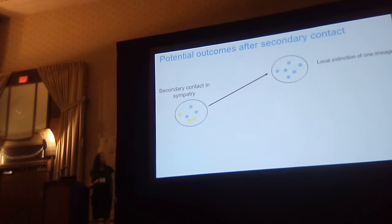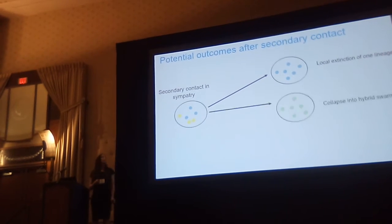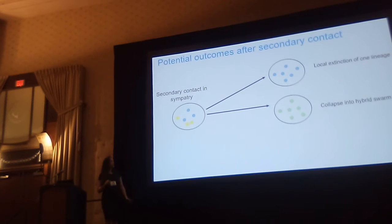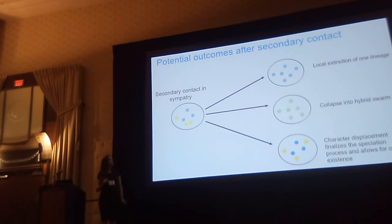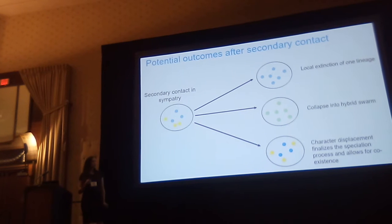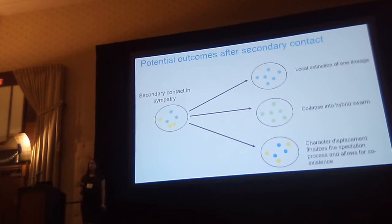We can get local extinction of one when entering the other. We can get collapse into a hybrid swarm. Or we can get character displacement acting to finalize the speciation process and honor the coexistence of these two new species.